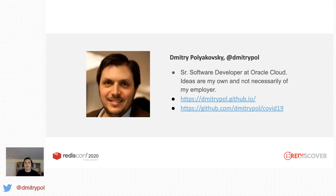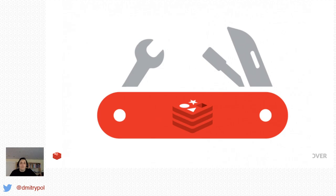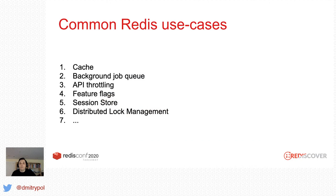I'm a senior software developer at Oracle Cloud. You can read my blog, follow me on Twitter, or check out the code used in this presentation. The way I think about Redis is that it's a multi-purpose tool, like a Swiss Army knife. It's good at a wide variety of things, and I use it for different purposes — as a cache, as a job queue, to throttle access to APIs, to store user session information, and so on.